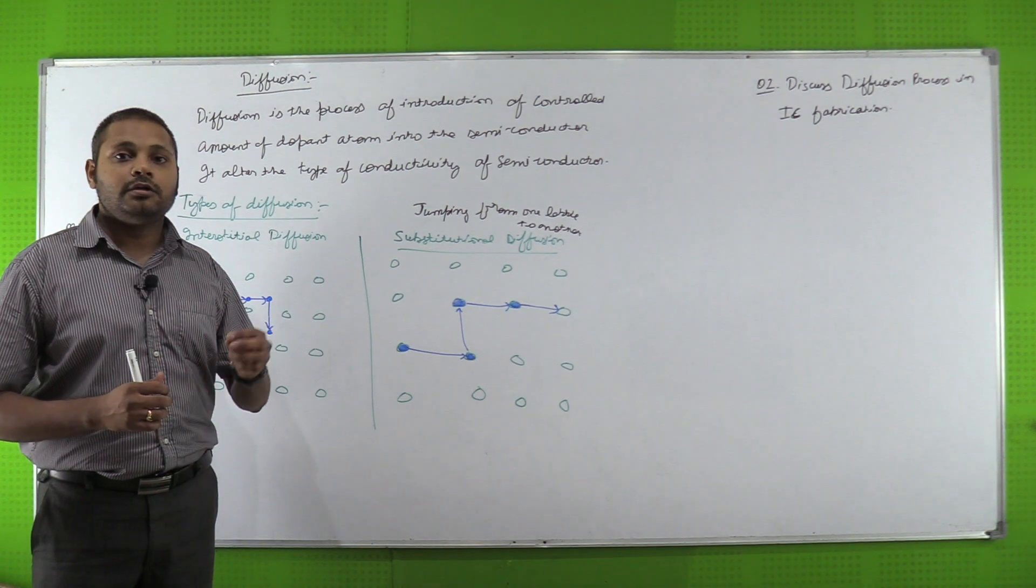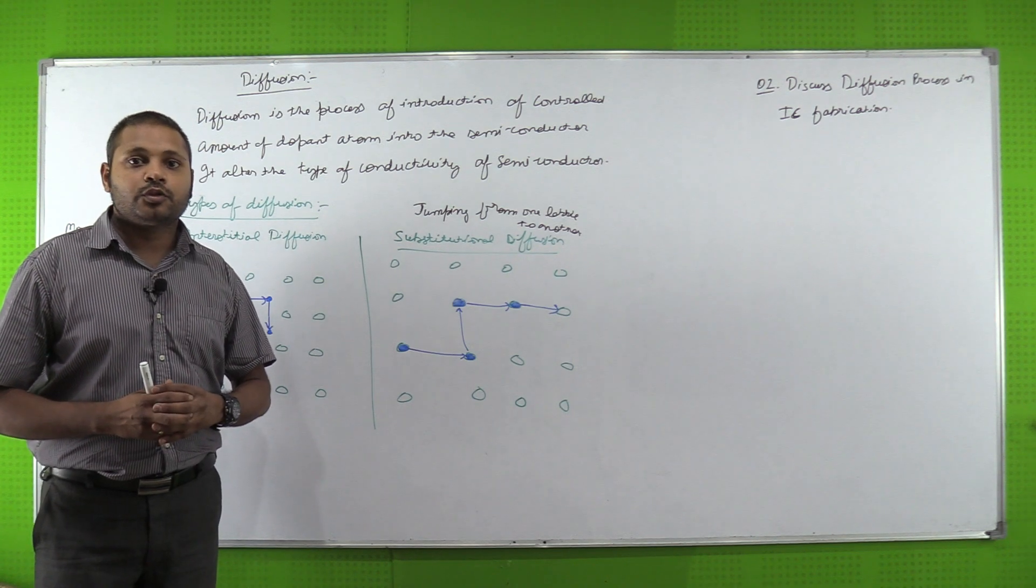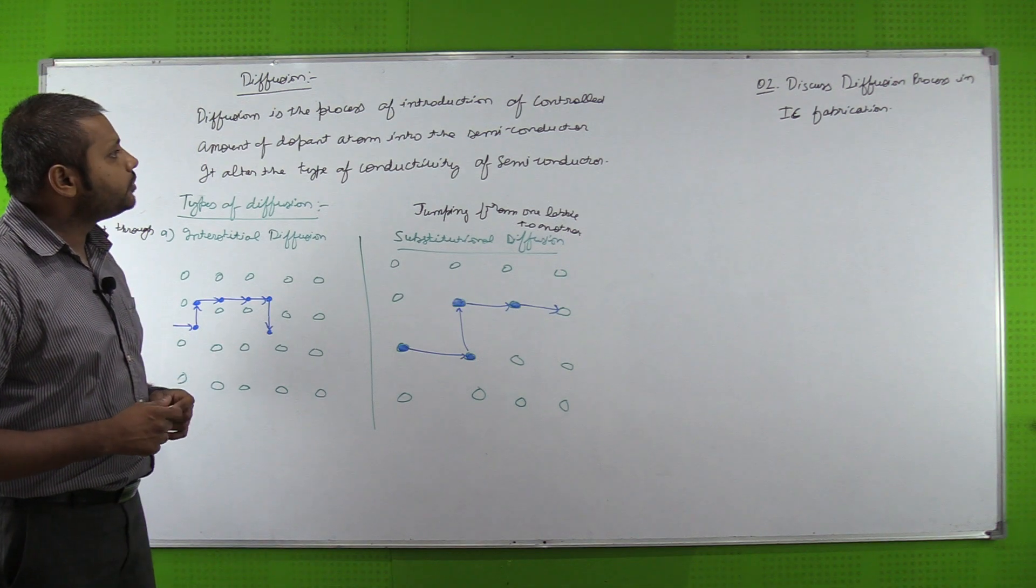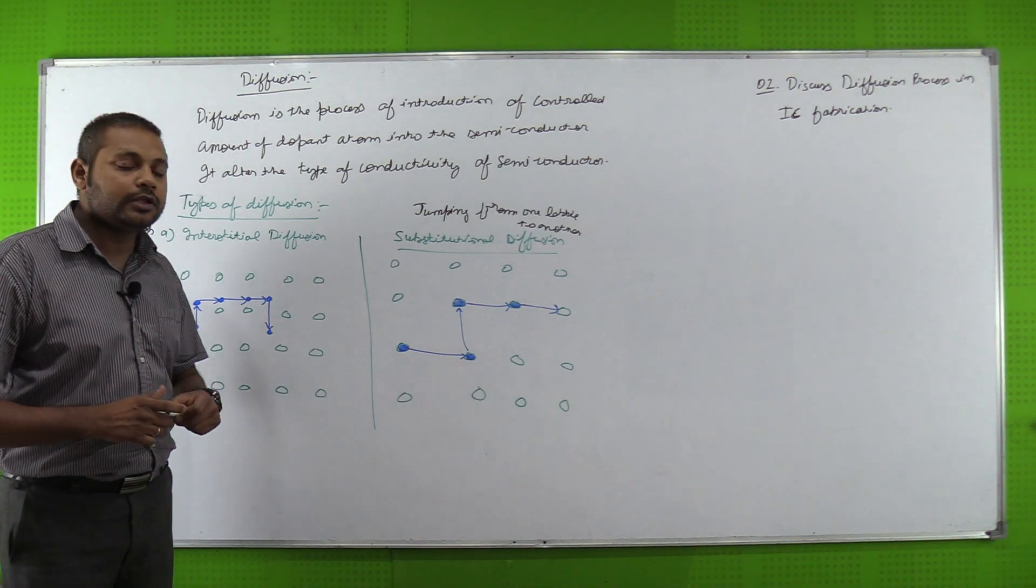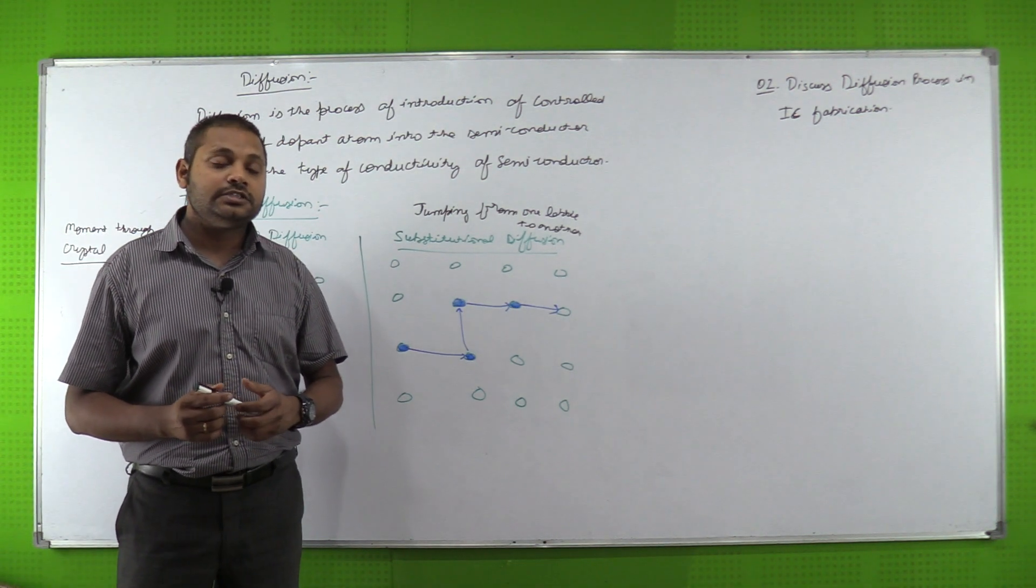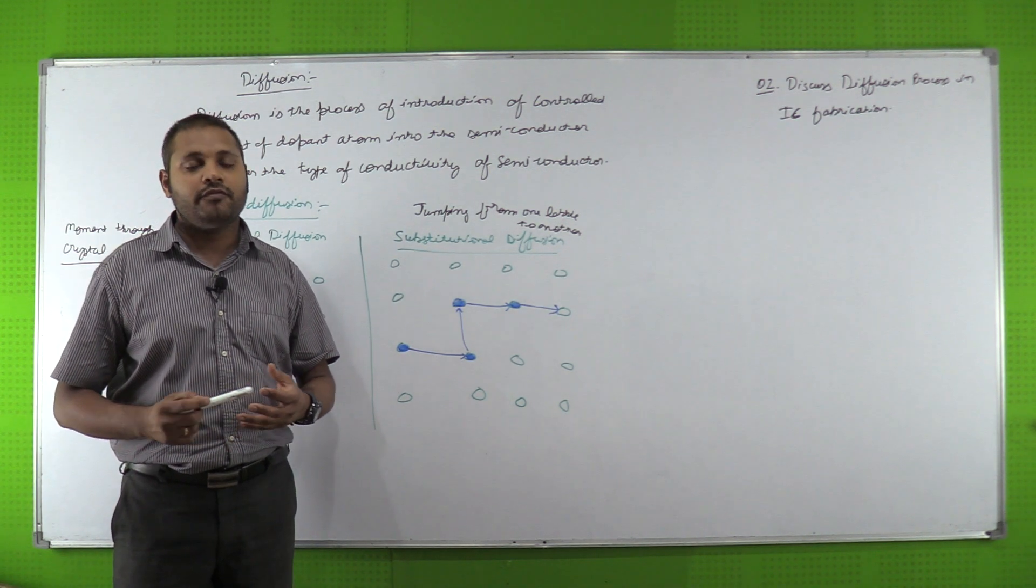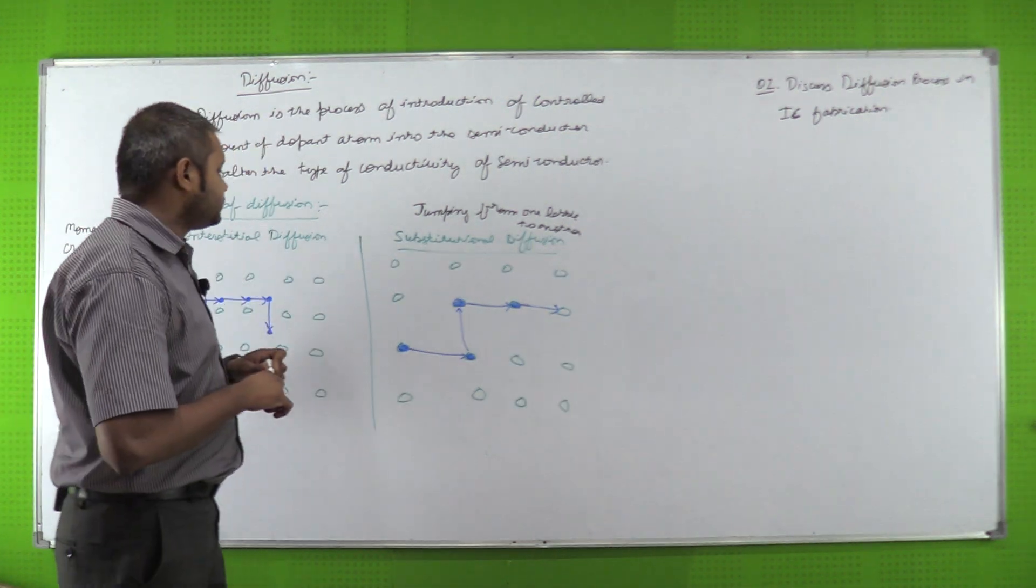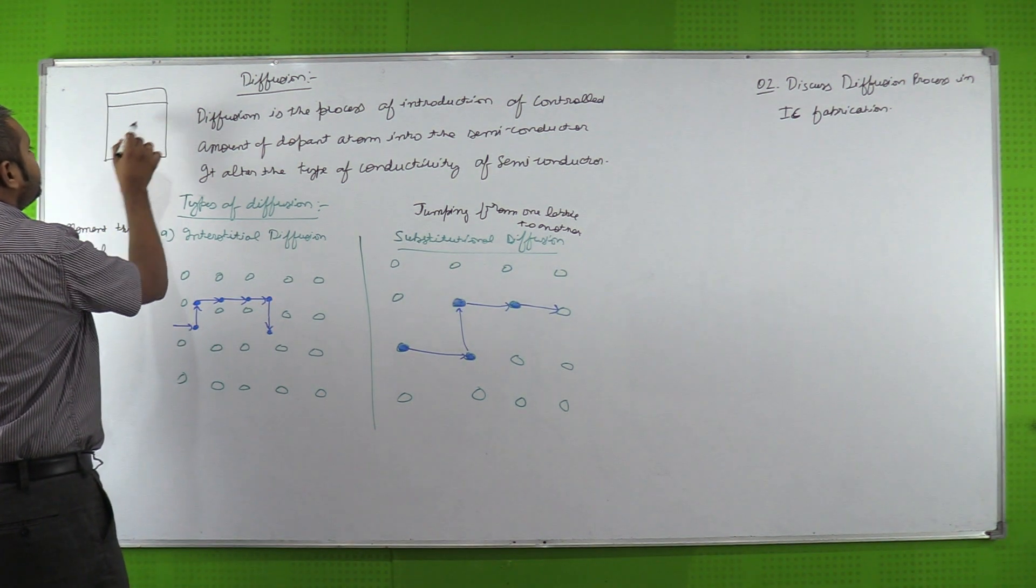Diffusion is the process of introducing a controlled amount of dopant atoms into the semiconductor. It alters the type of conductivity of semiconductor. So the impurity atom is added by some dopant, then obviously it will increase its conductivity. We know in previous questions we have discussed the energy band.